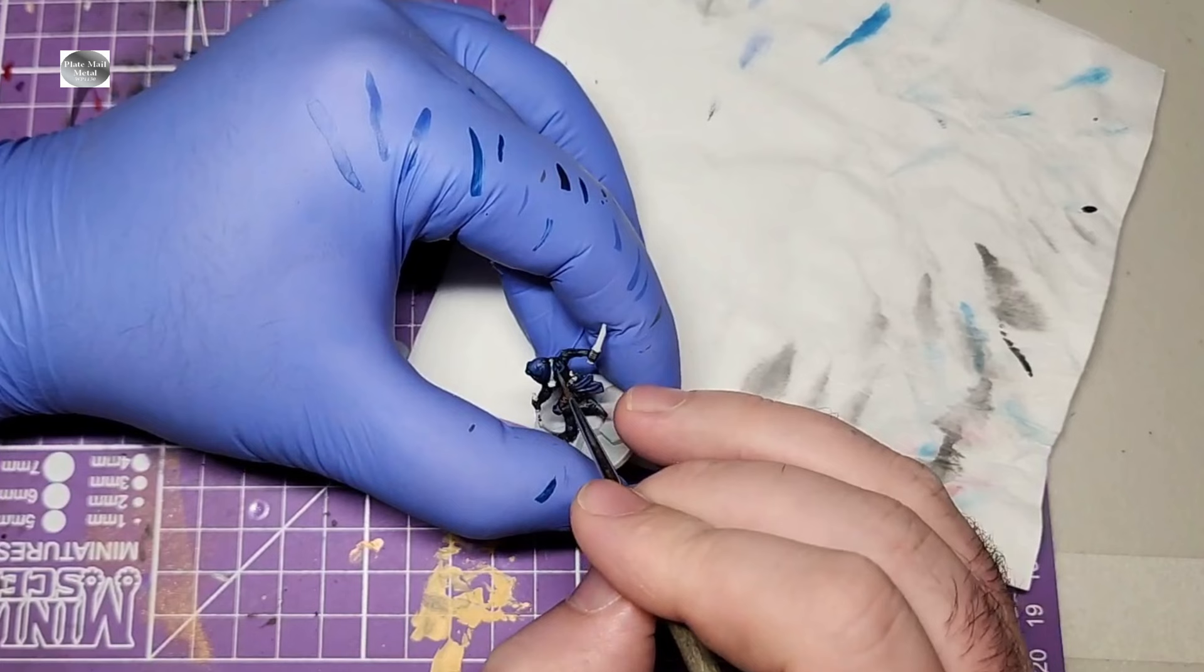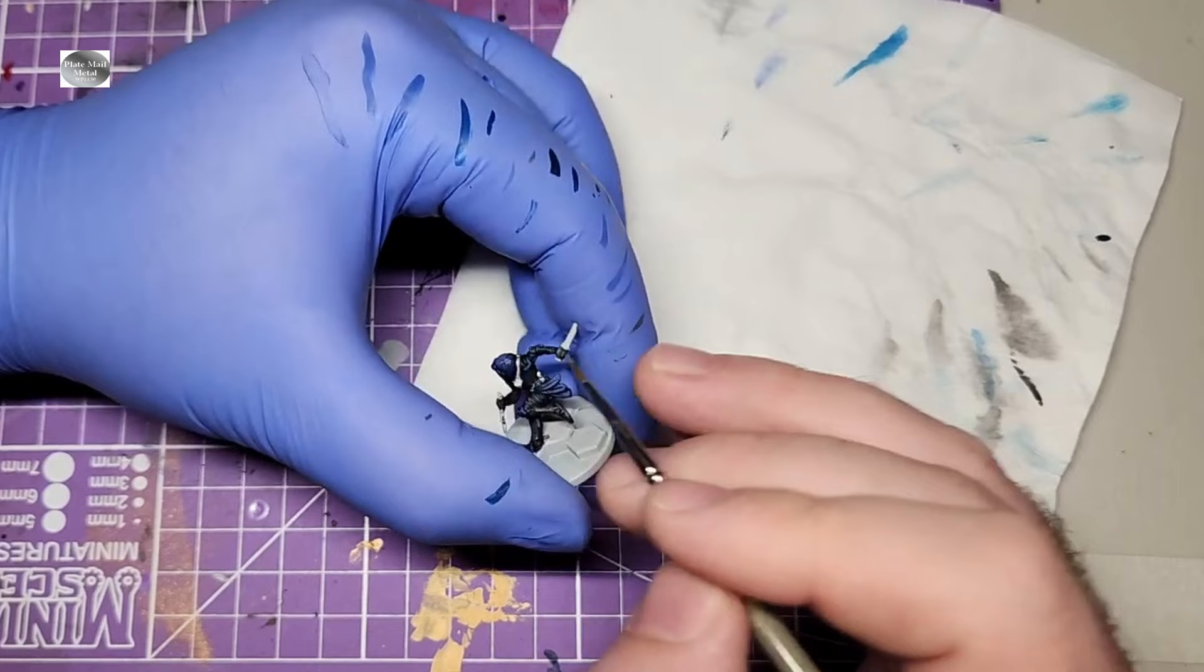Then it was on to the metals. I started with Plate Mail and used this on the harness thing that he has going around his body. You want to be careful and take your time here as it crosses over the other colors and it's really easy to make a mistake.